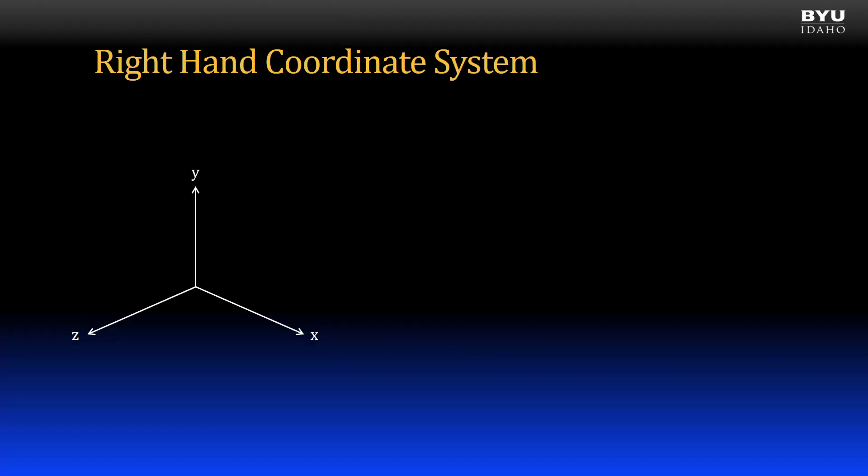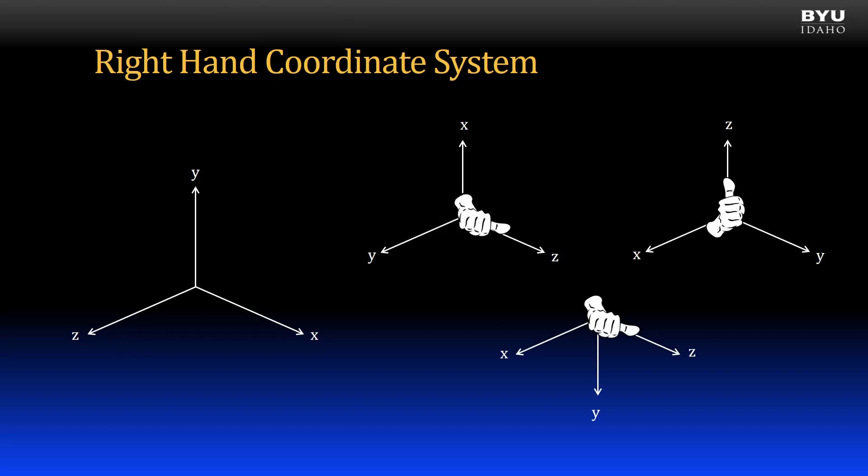A right-hand coordinate system can be represented in various forms. If you consider these alternative forms, you realize that they are each the same coordinate system, just viewed from different perspectives.